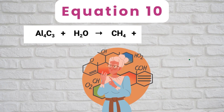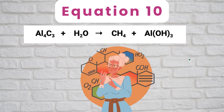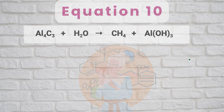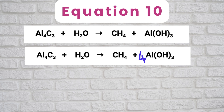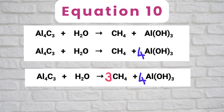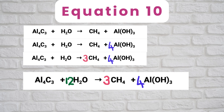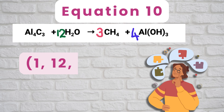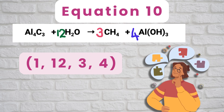Equation 10: Al4C3 plus H2O gives CH4 plus Al(OH)3. Balance aluminum by putting a coefficient of 4 in front of Al(OH)3, so 4 aluminums on both sides. Balance carbon by putting a coefficient of 3 in front of CH4, so 3 carbons on both sides. Hydrogens on the right are 3 times 4 equals 12 plus 4 times 3 equals 12, totaling 24. Put a coefficient of 12 in front of H2O, making hydrogen 24 on both sides. Oxygen is 12 on the left and 4 times 3 equals 12 on the right. The equation is balanced; coefficients are 1, 12, 3, 4.